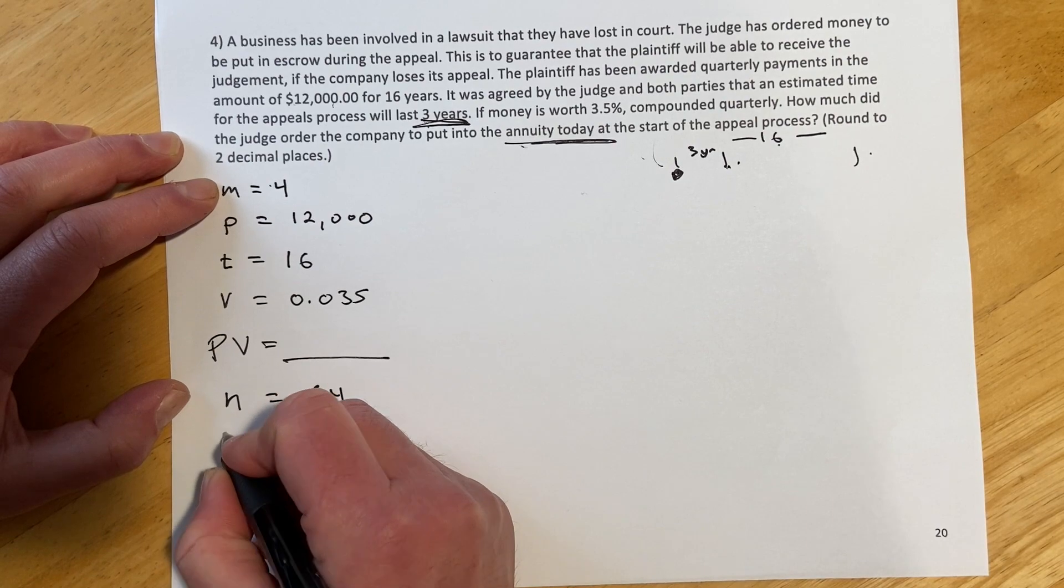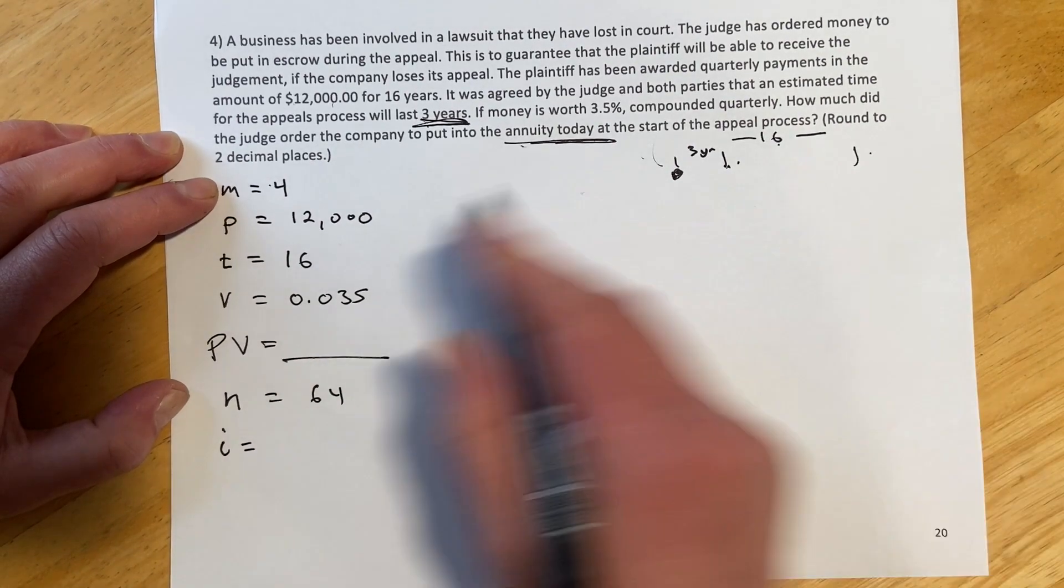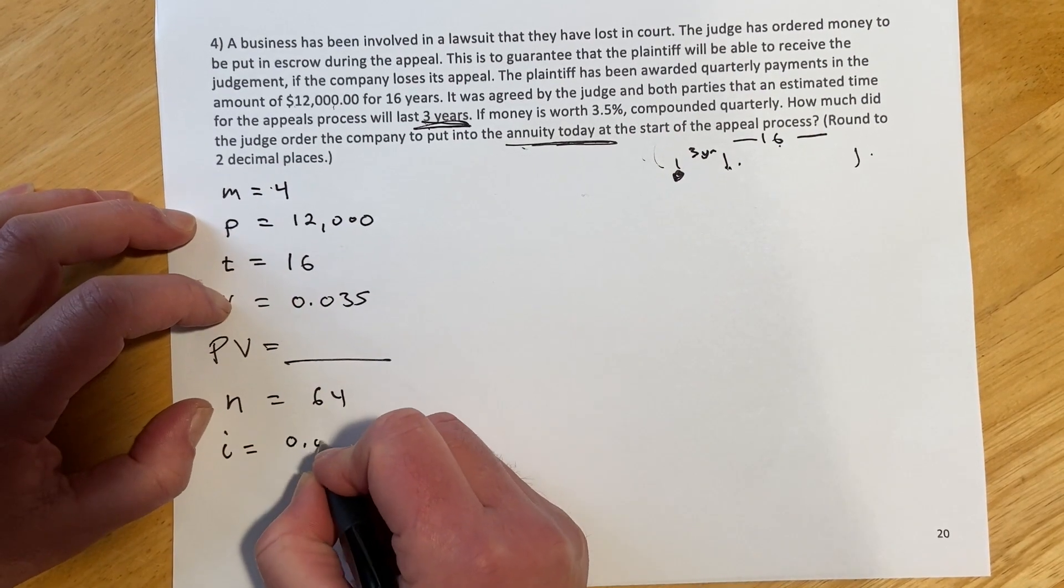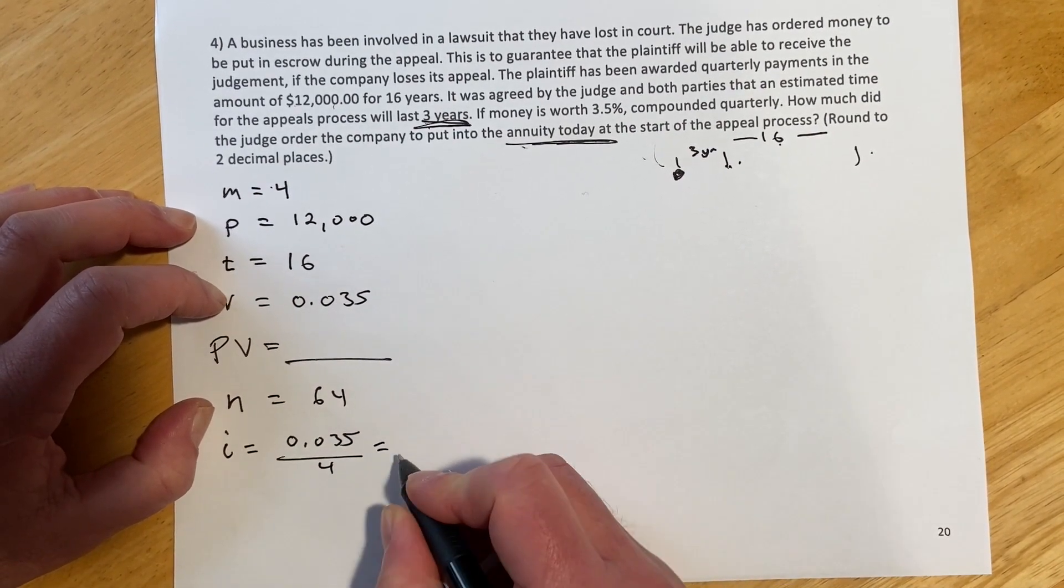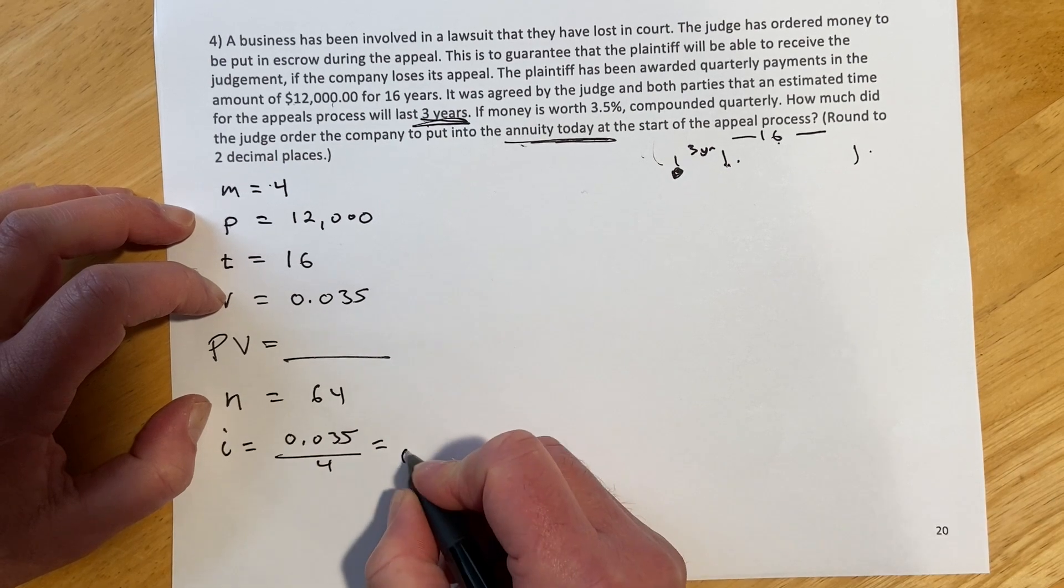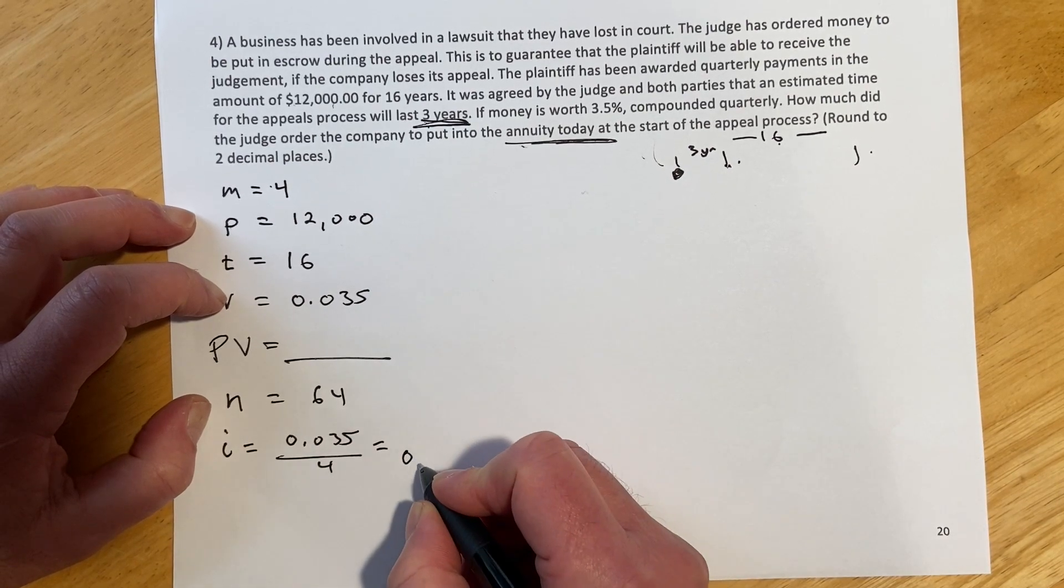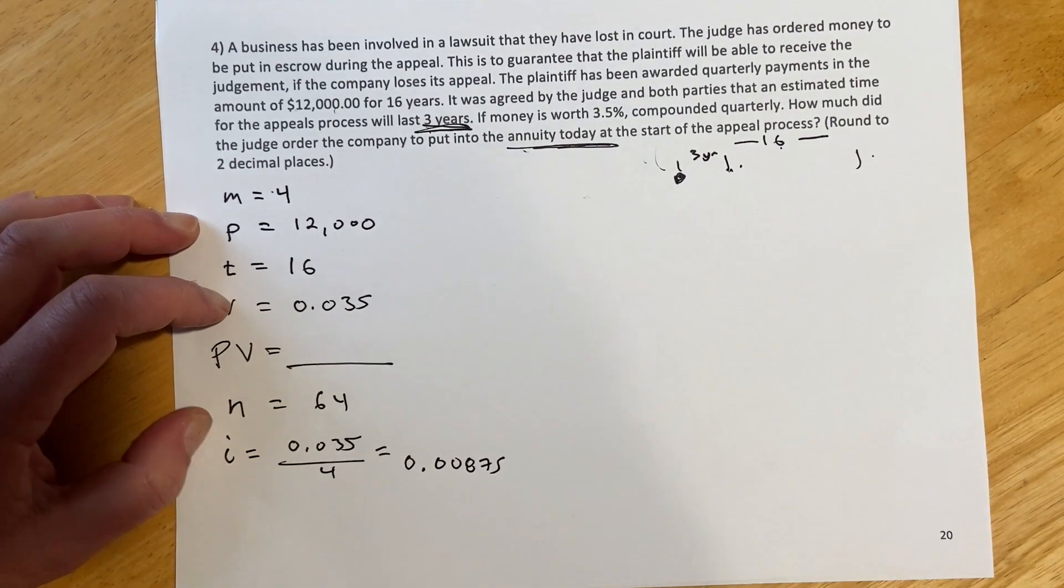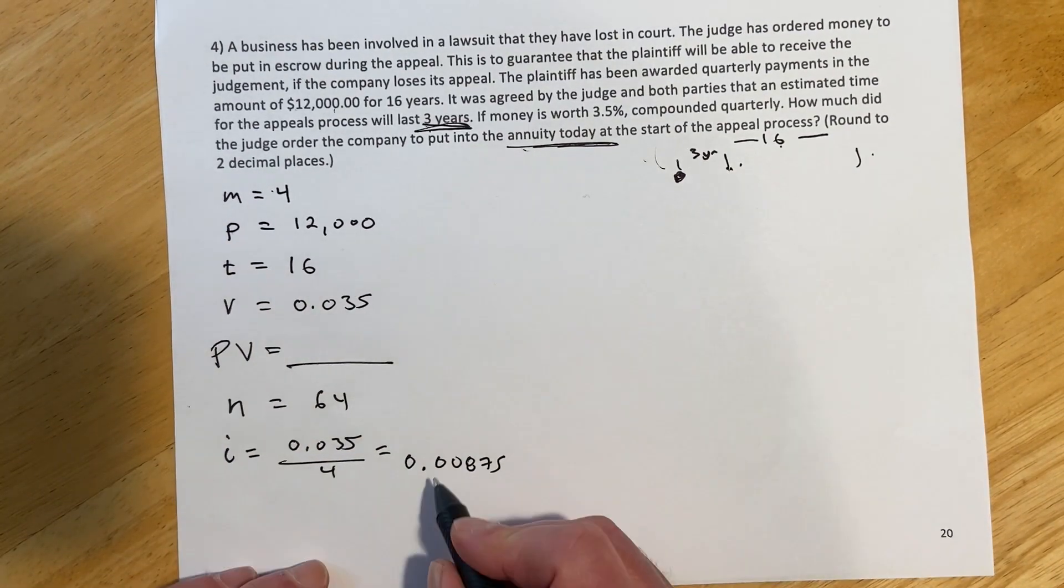And then our interest rate is, where'd it go? It's 0.035 divided by 4, and that would be 0.00875. So there's our I.